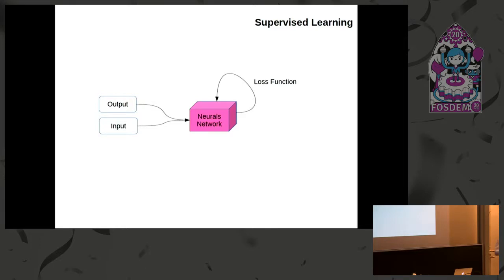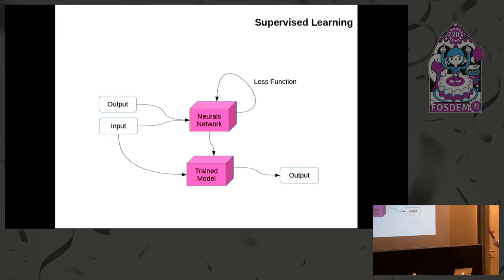If we look at deep learning, supervised learning is quite simple. You have one input, one expected output, and you train a neural network until it is able to compute the output from the input. The key point is the loss function — the ability to compute the distance between what it performed and what was expected. Since you are able to compute a meaningful distance function, you are then able to find a way to converge to a solution. Once you train a model correctly, you are able — only with the input — to use your trained model to compute an output.